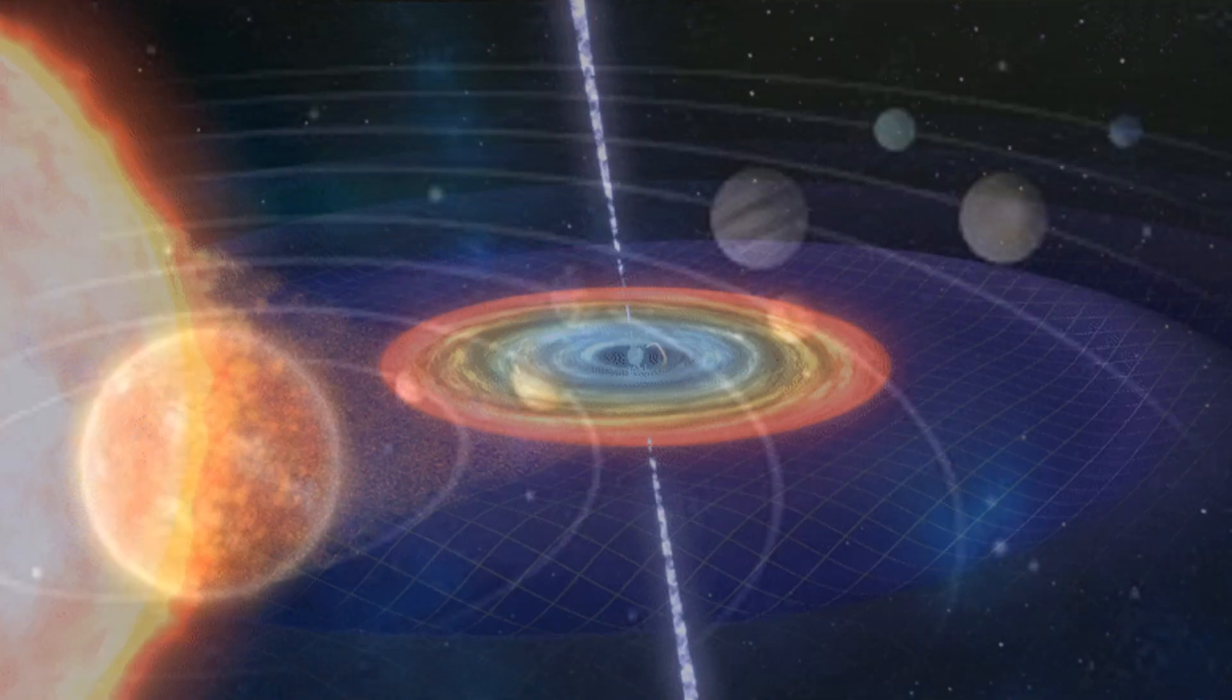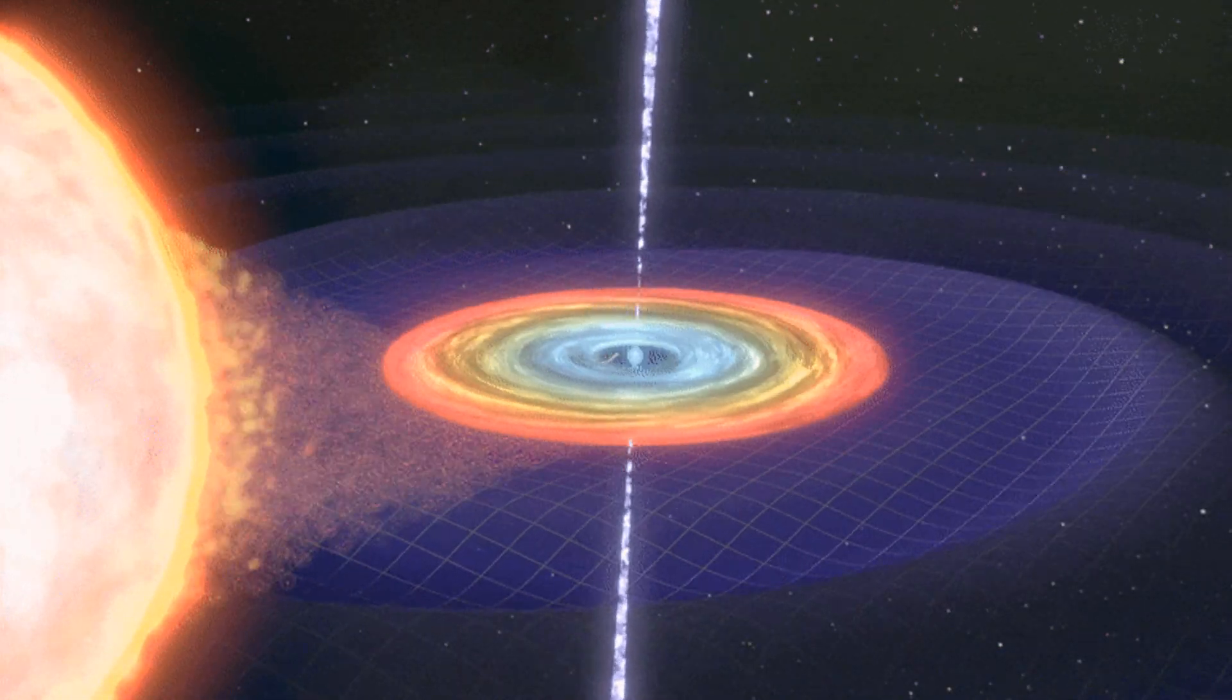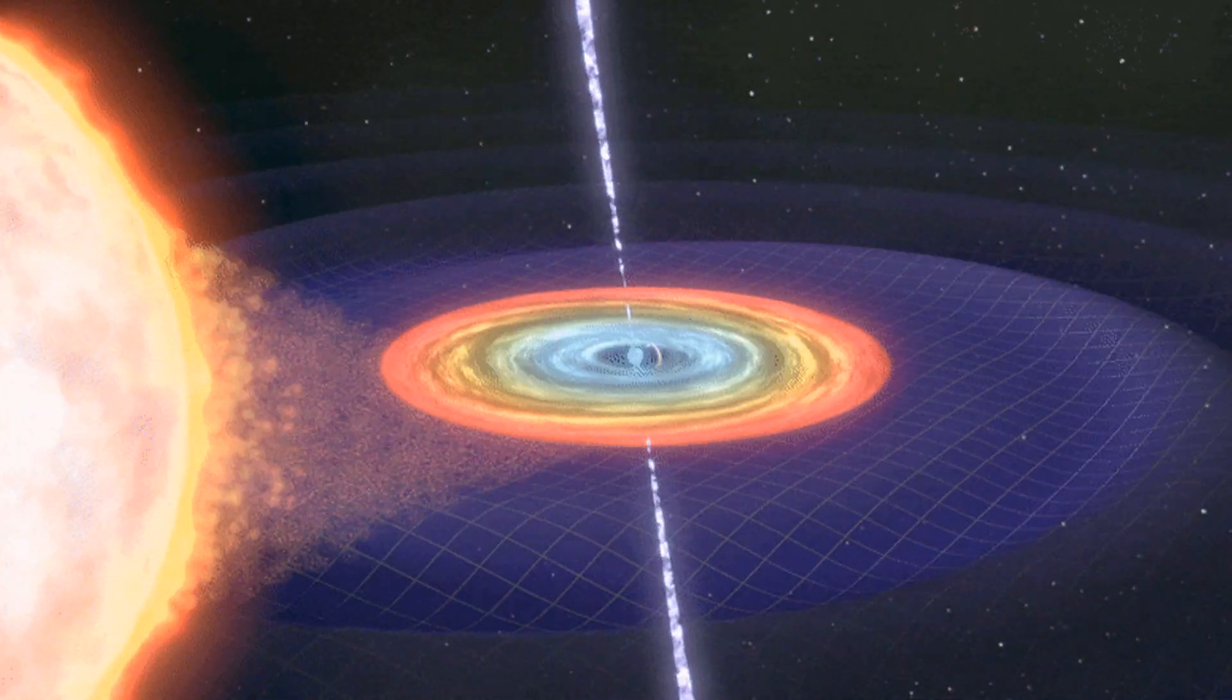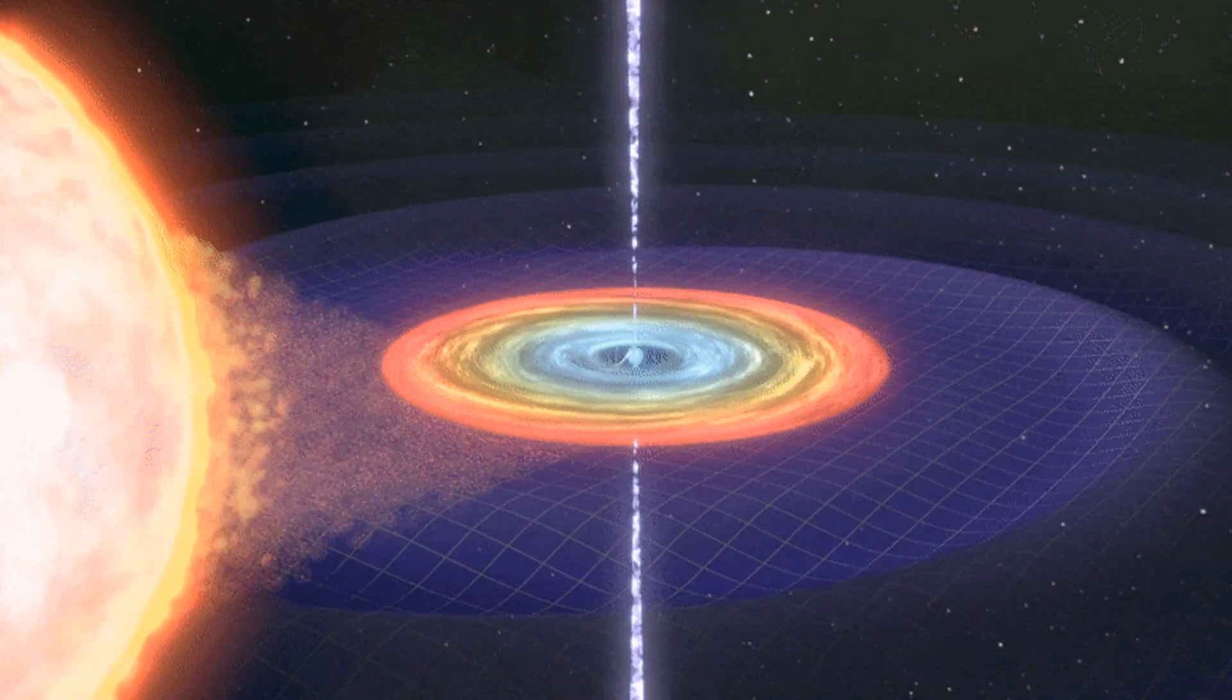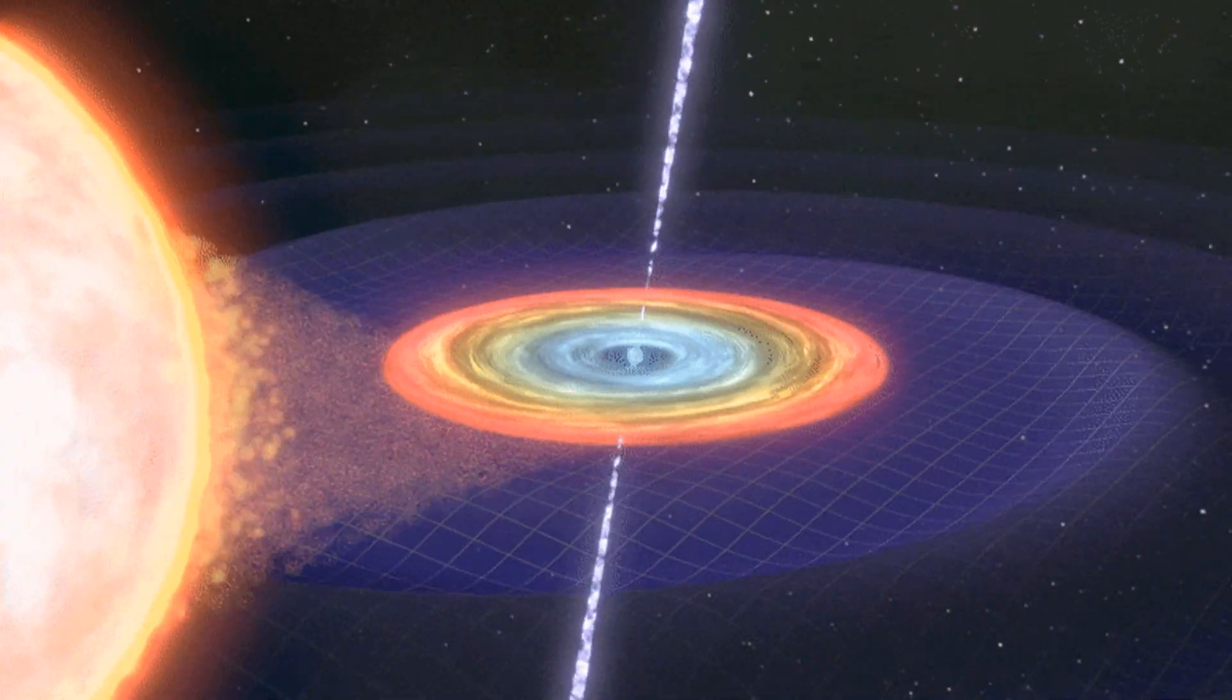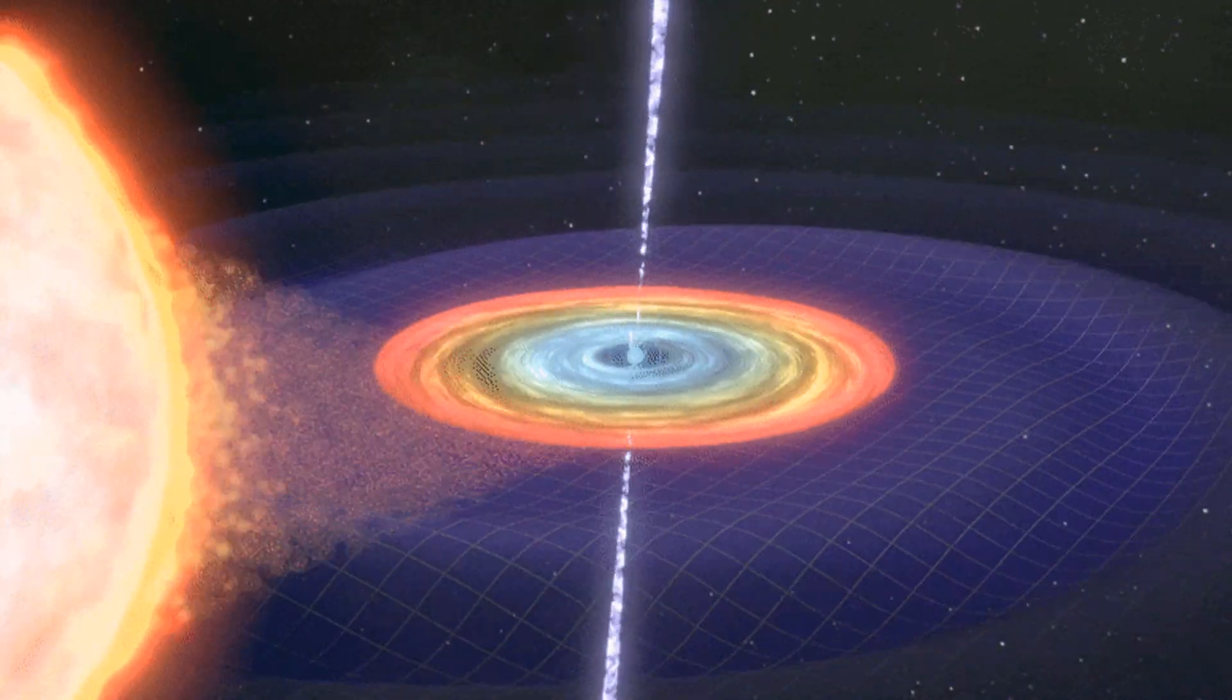It is well known that the passage of gravitational waves through any given region of space causes the region of space to contract and relax accordingly. Take a look at this animation of the passage of a gravitational wave.